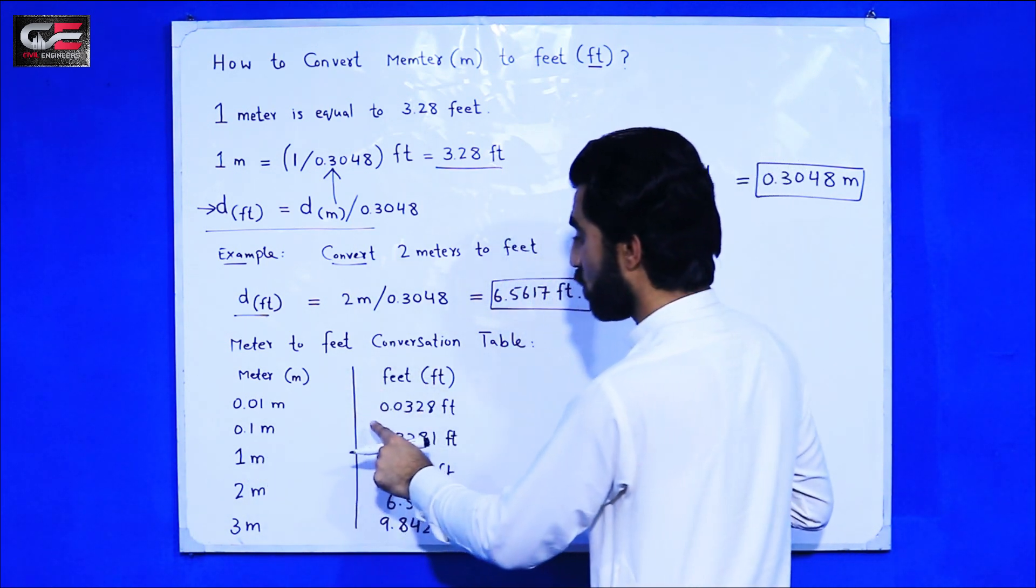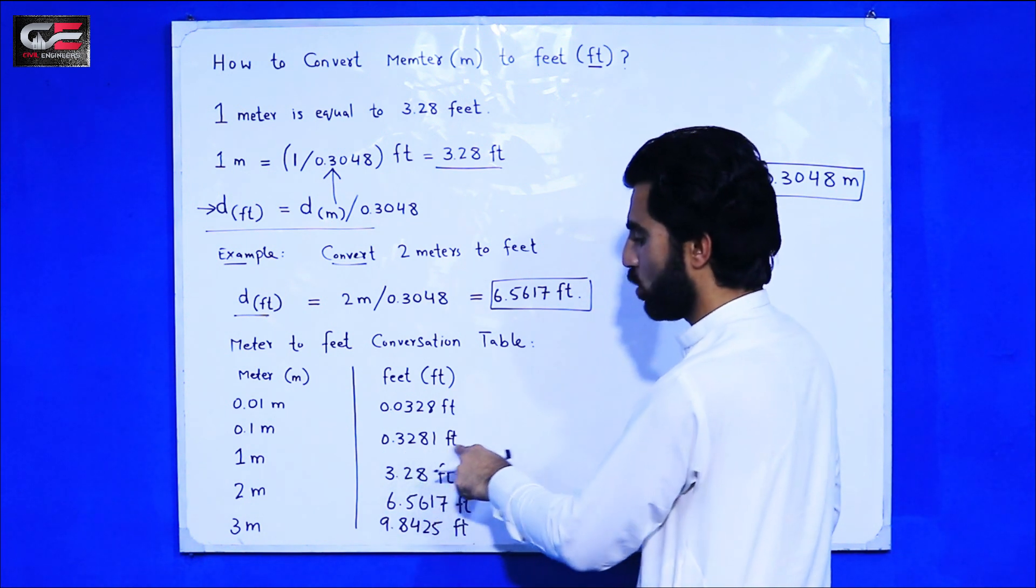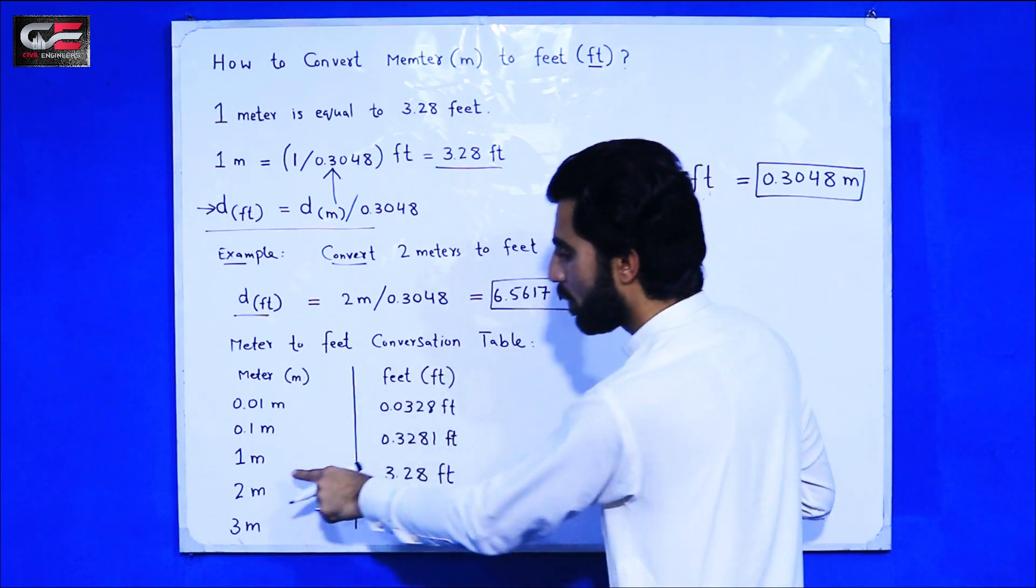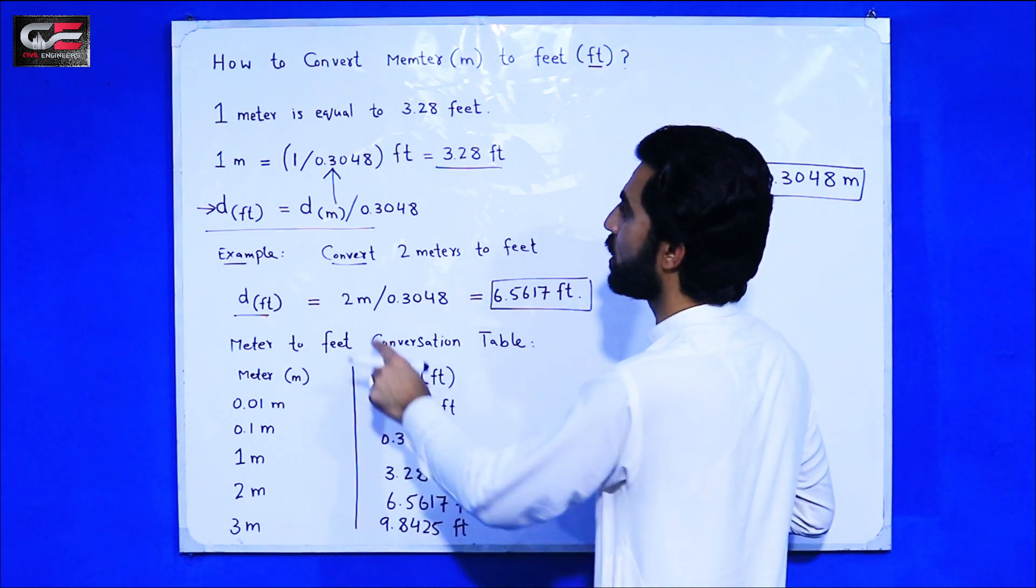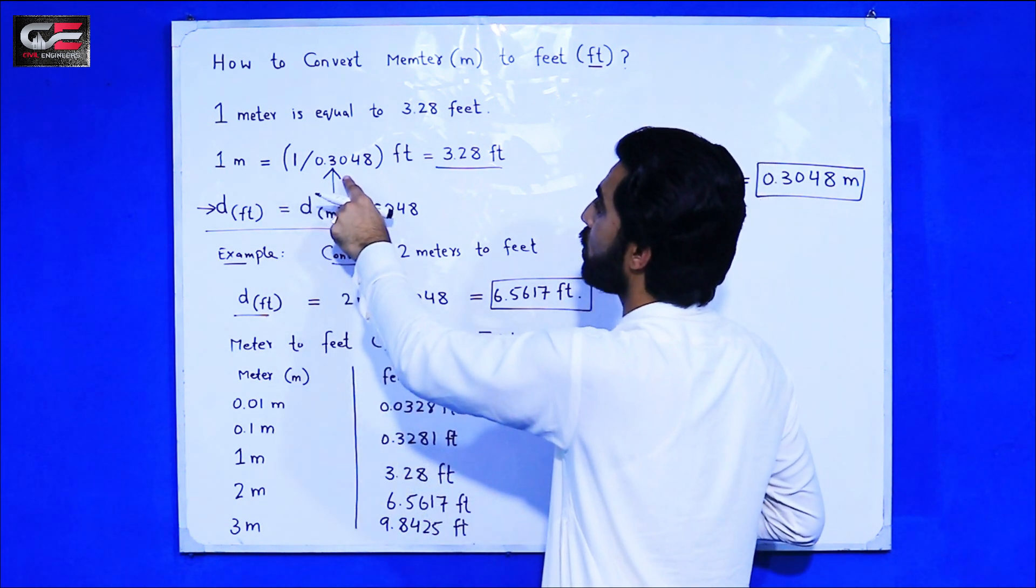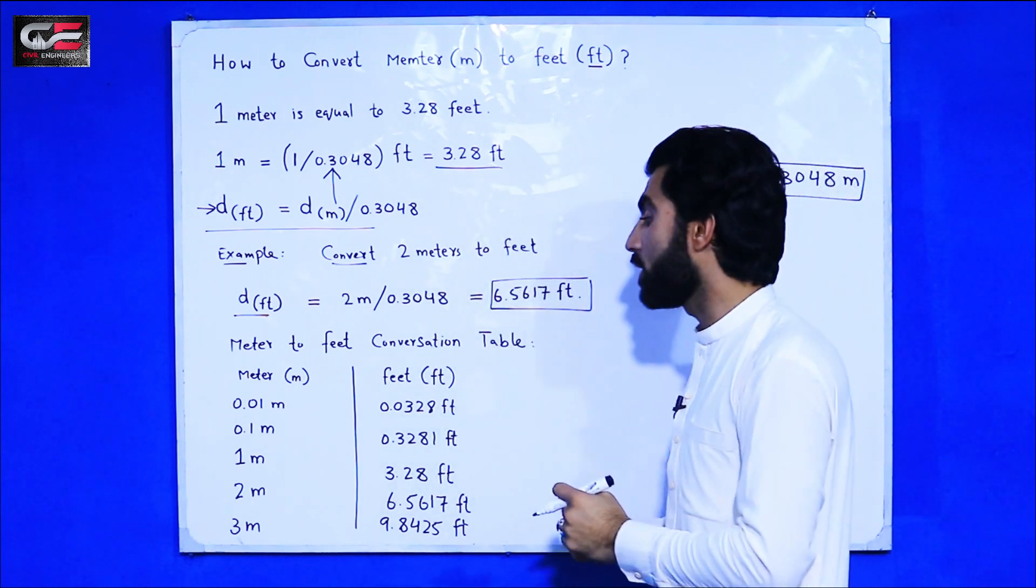Again, 0.1 meter is equal to 0.3281 feet. Again, 1 meter is equal to 3.28 feet. How? You can see here, 1 divided by 0.3048, it will give us 3.28 feet.